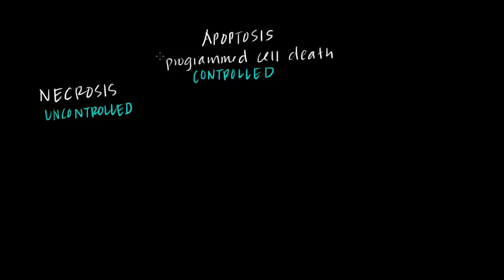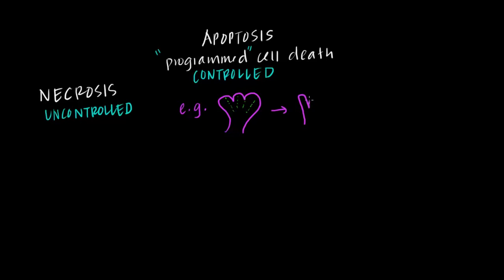Apoptosis, on the other hand, as its definition implies, is a programmed type of cell death that usually serves some big purpose and can often confer an advantage to the organism. One example of this is embryological development — specifically the development of our fingers and toes. Early on in development, when we're still a fetus, our hand looks something like a paw. Through apoptosis, the tissue between our digits eventually dies off, and that purposeful controlled death ultimately allows us to produce a hand with five separated digits that we call fingers.